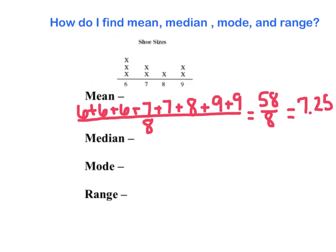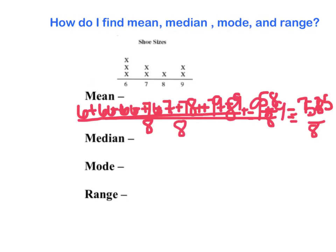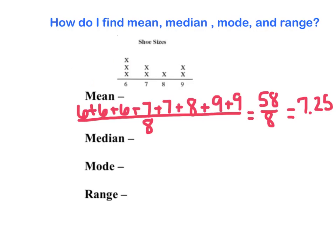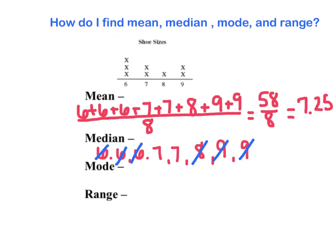So let's find the median. Median is the middle number, and to find the middle number you need to put the numbers in order from least to greatest. So I've got 6, 6, 6, 7, 7, 8, 9, and 9. Now I'm going to find the middle number by calculating from each end. In this case, I've got two size 7s in the middle, so 7 is going to be my median. If it happened to be two different numbers there, I would average them by adding them together and dividing by 2. So my median is equal to 7.